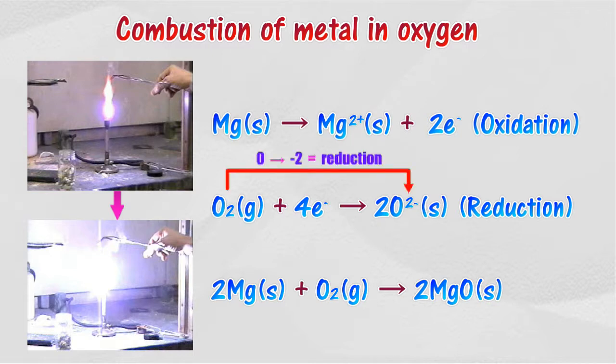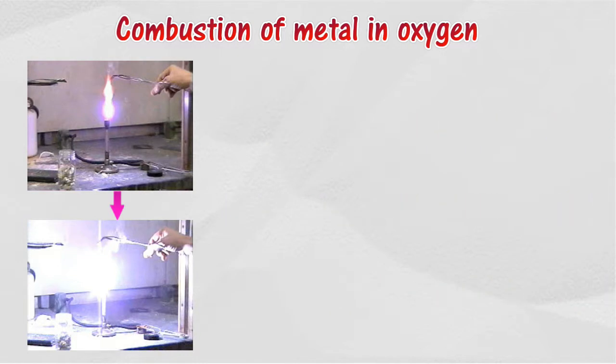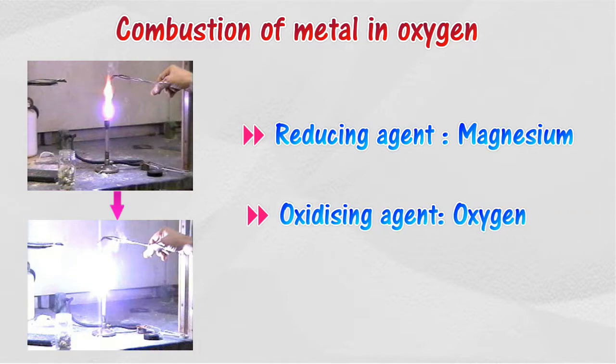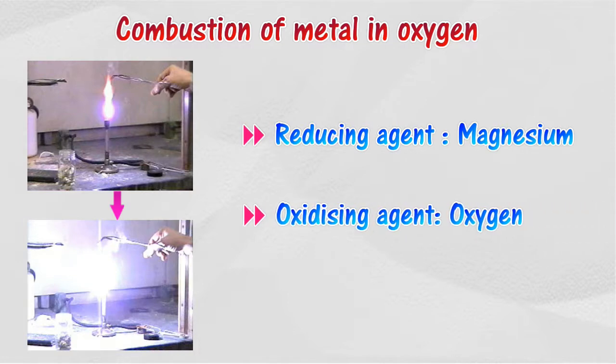The oxygen atom receives electrons to form oxide ion. In this redox reaction, magnesium reduces oxygen to oxide ion, therefore magnesium acts as a reducing agent. Oxygen oxidizes magnesium to magnesium ion, therefore oxygen acts as an oxidizing agent.